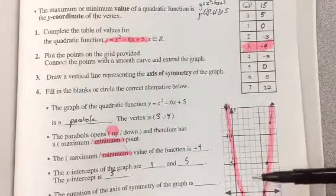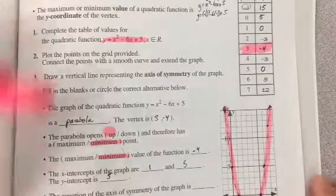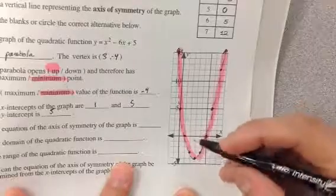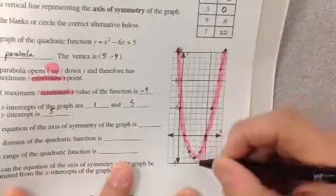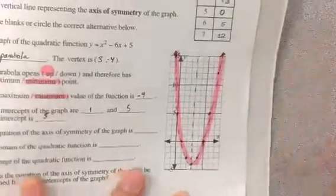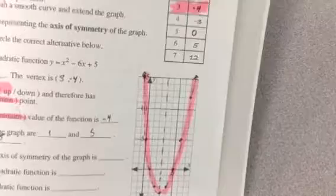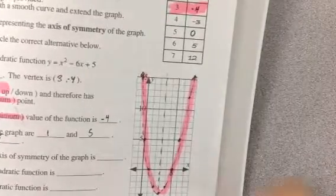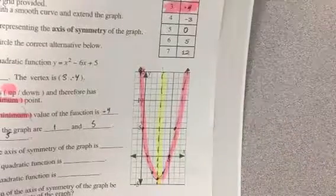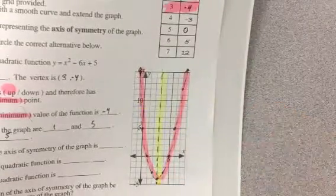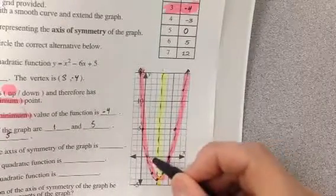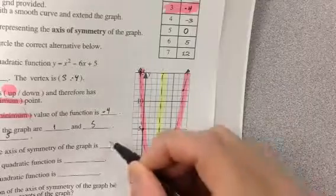The equation of the axis of symmetry — what that means is if we were to split this graph in half, we want to know the x-value that splits the graph so it forms a mirror image, where this side of the graph is the same as the other side. The x-value where we have an axis of symmetry is x equals 3.